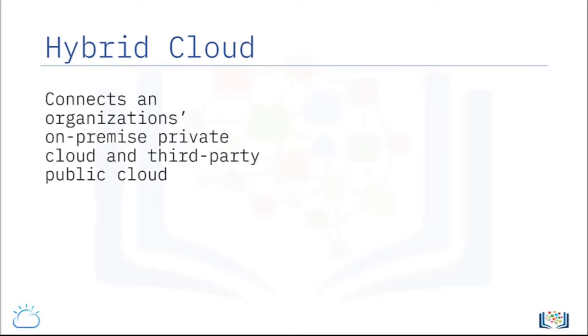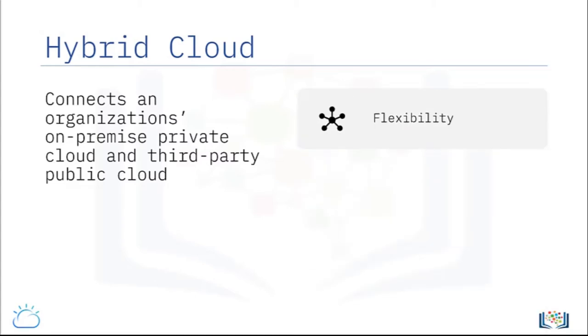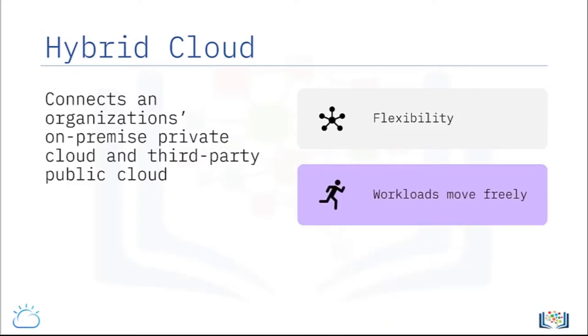Hybrid cloud is a computing environment that connects an organization's on-premise private cloud and third-party public cloud into a single flexible infrastructure for running the organization's applications and workloads. The mix of public and private cloud resources gives organizations the flexibility to choose the optimal cloud for each application or workload, and workloads move freely between the two clouds as needs change.